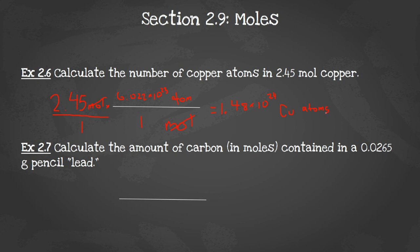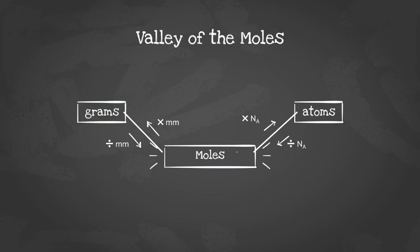We should get 1.48 times 10 to the 24th copper Cu atoms. That is a very easy mole to atom problem. So in our valley of the moles, we went from down here up to atoms. We multiplied by Avogadro's number. One step, that was it.